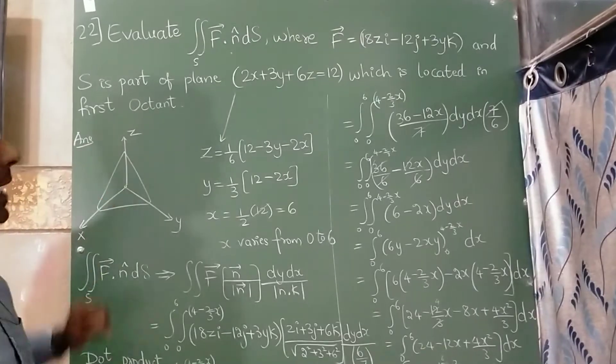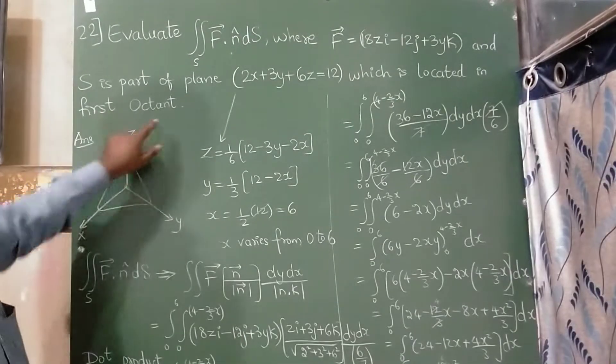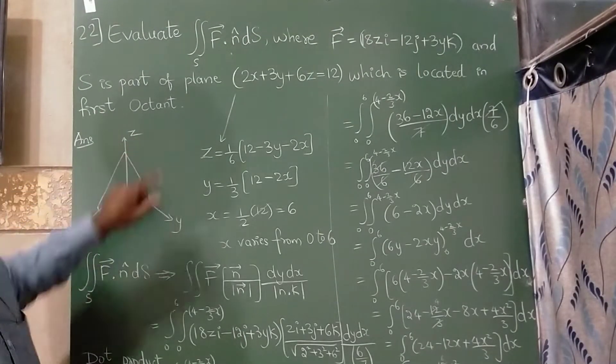I have drawn the diagram here. First octant means x, y, z all are positive.